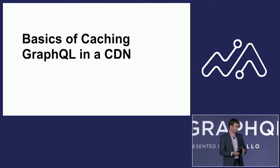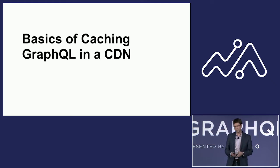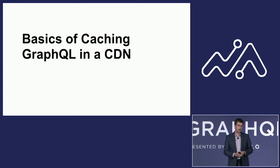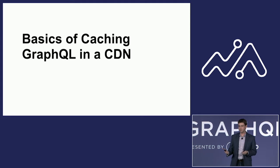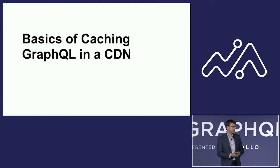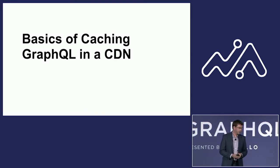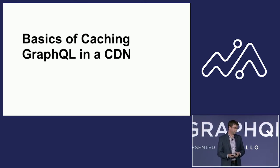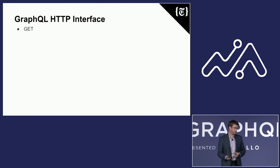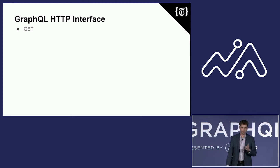I'm going to go over the basics of HTTP caching and how it relates to a CDN. The GraphQL spec itself does not define the transport. Of course, most people are using HTTP with JSON, but it doesn't actually say how you should do it. You can actually do GET requests with GraphQL — commonly using POST, but GETs are also possible.